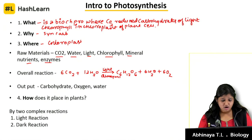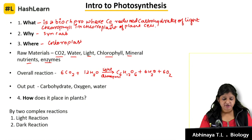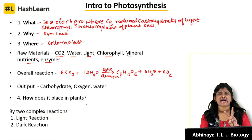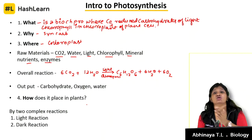This is the overall reaction of photosynthesis. The output is carbohydrates, oxygen, and water. There are two complex reactions: light reaction — that is the light-dependent reaction — and dark reaction, the light-independent reaction. These are the two reactions by which the plant fixes carbon dioxide into carbohydrates.